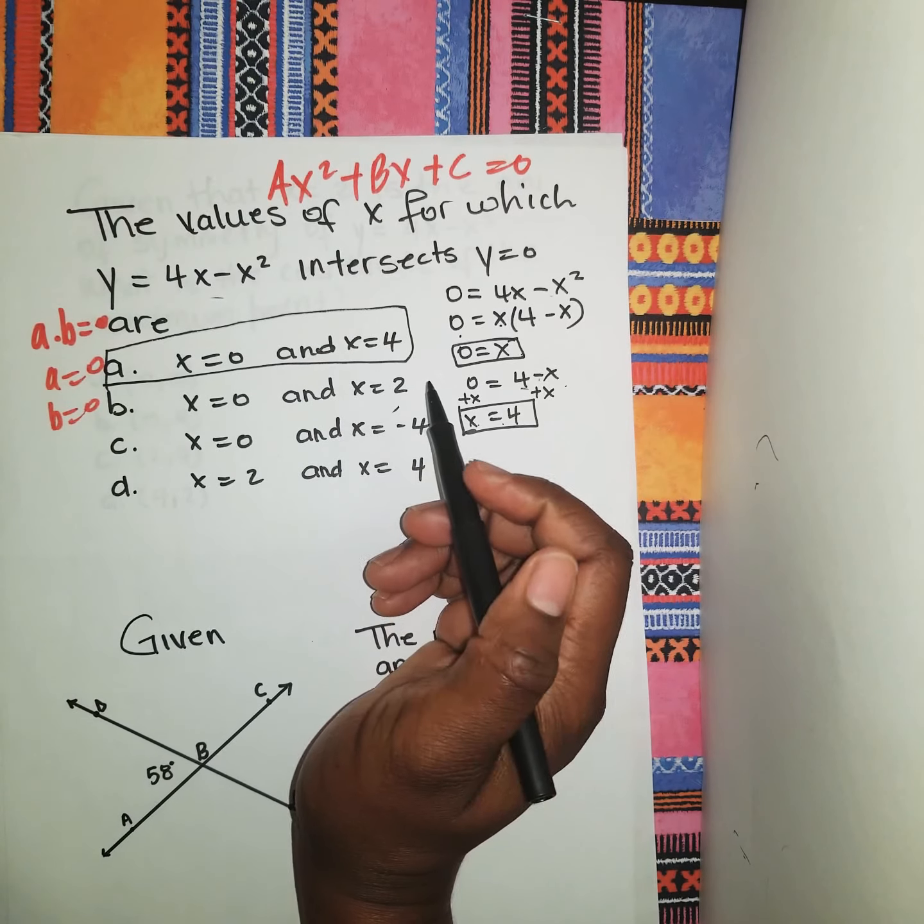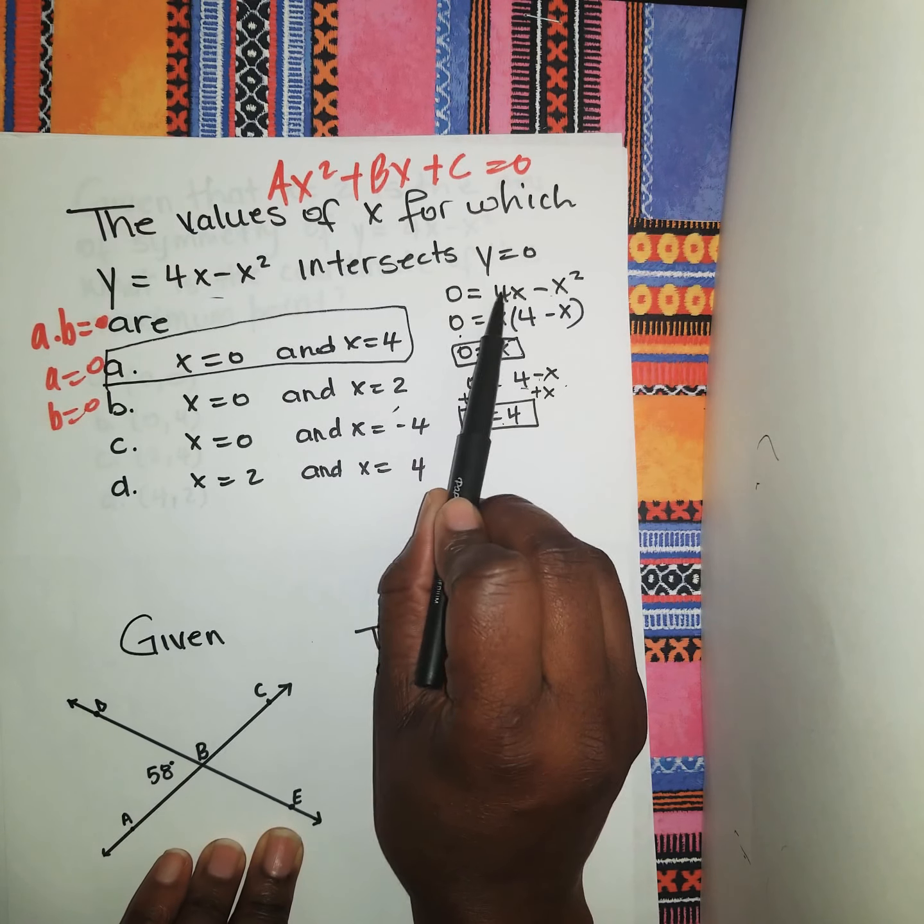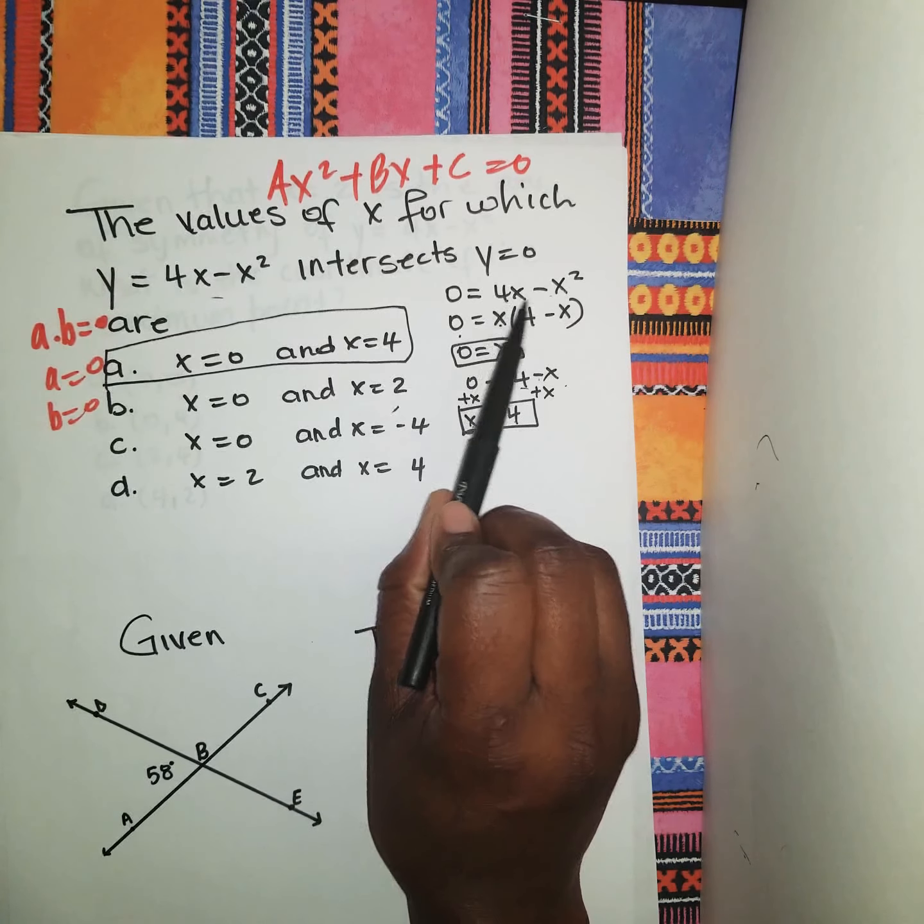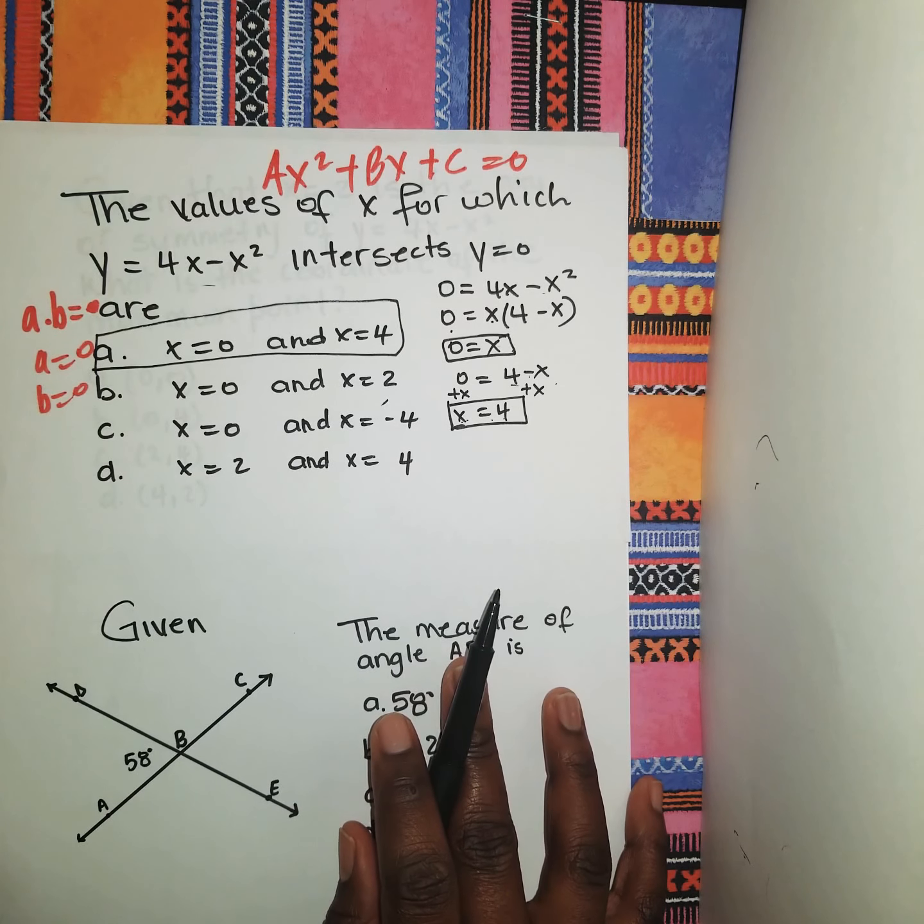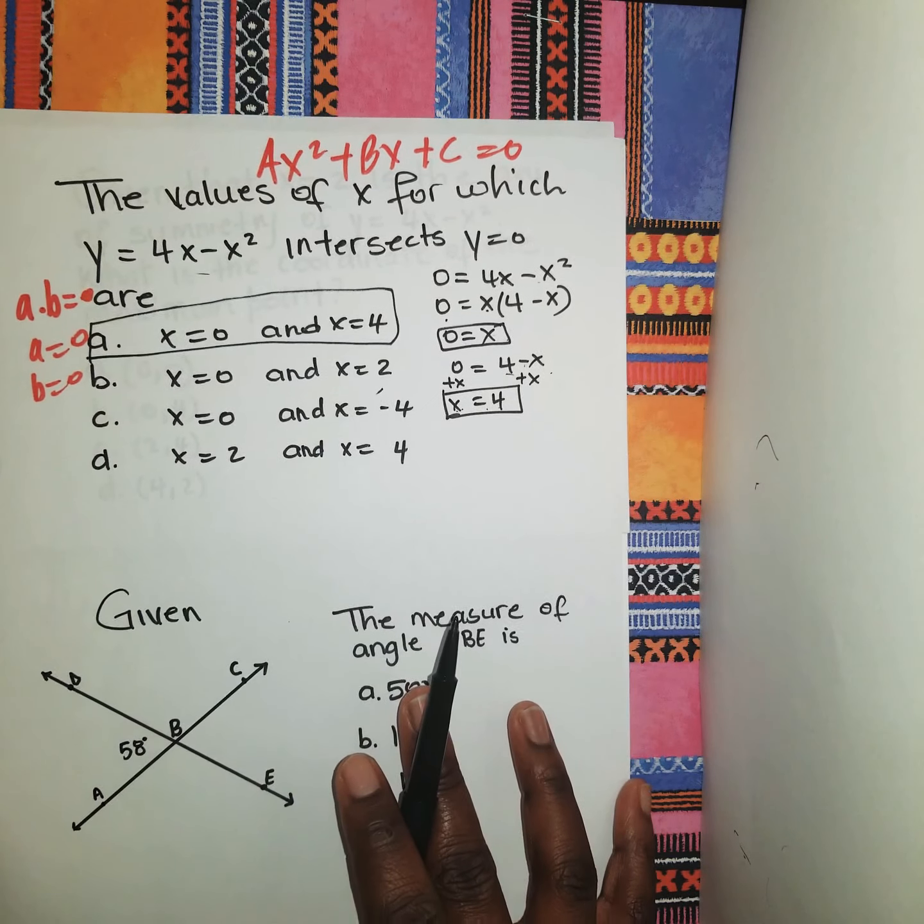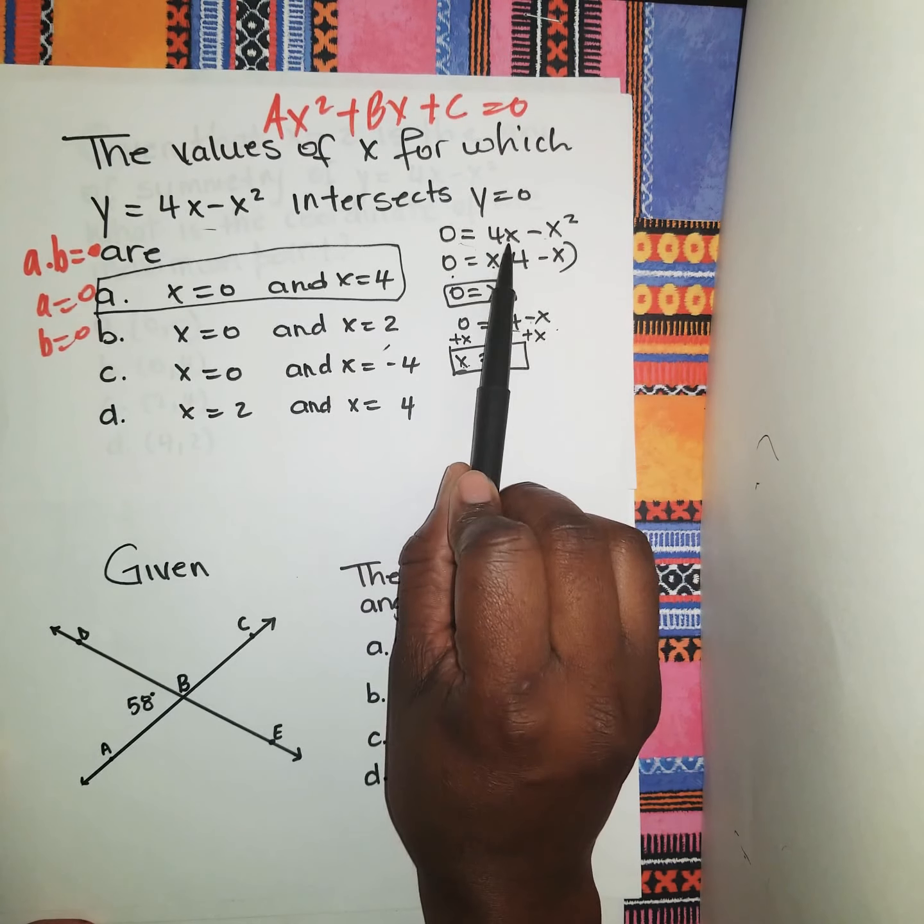And right here is our solution, so x = 0, x = 4. Let's see which of these answers it will be. So right here the solution is A. And if you should substitute x = 0 or x = 4 into this equation given, you should get 0. If you put 4 into this, it should give you 0 on both sides, that means it's balanced.